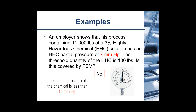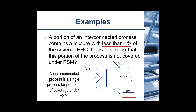An employer's process contains 11,000 pounds of a 3% highly hazardous chemical solution with an HHC partial pressure of 7 millimeters of mercury. The threshold quantity of the HHC is 100 pounds. Is this covered by PSM? OSHA's PSM standard states that if the partial pressure of a highly hazardous chemical is less than 10 millimeters of mercury, then the process is not OSHA-covered even if the threshold quantity is exceeded. So this process is not covered.